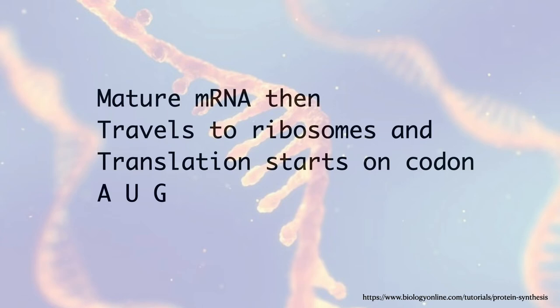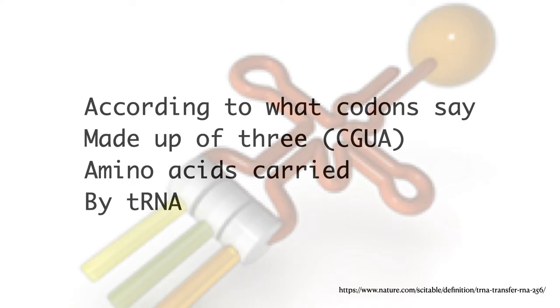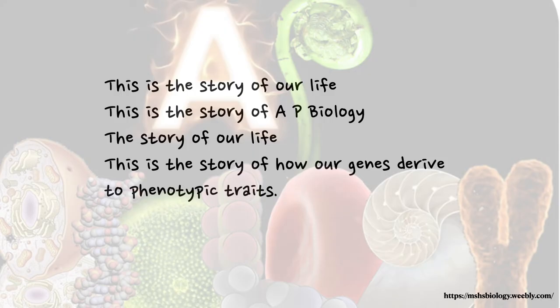Mature mRNA then travels to ribosomes and translation starts on codon AUG. According to what codons say, made up of three nucleotides — G, U, A — amino acids are carried by tRNA.